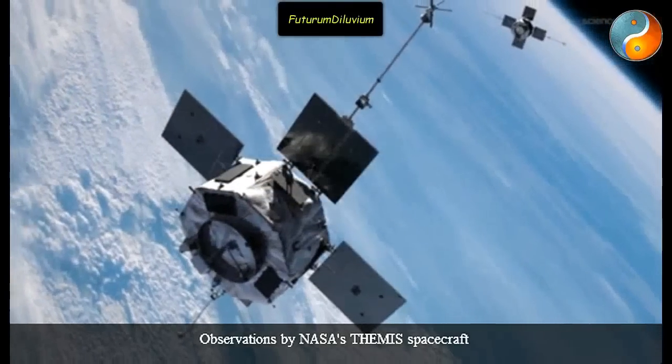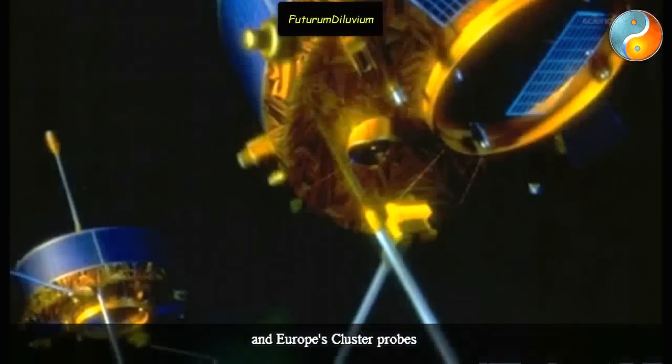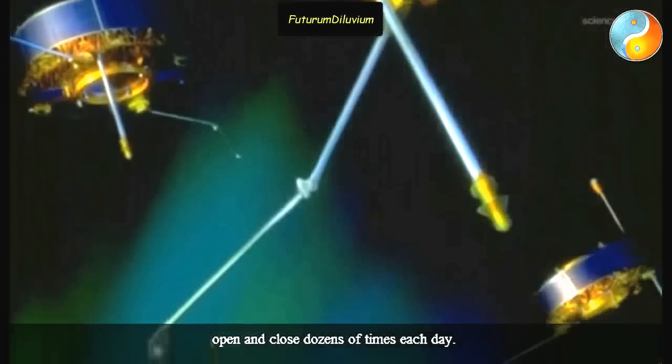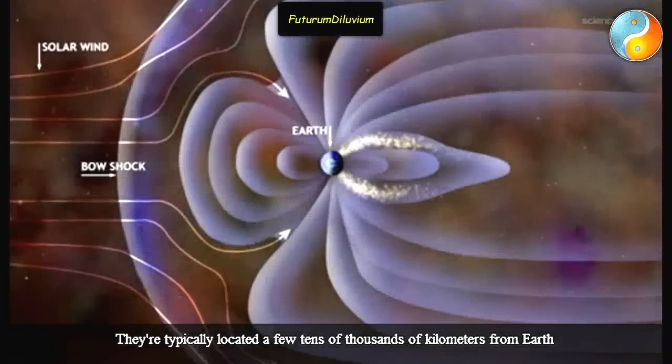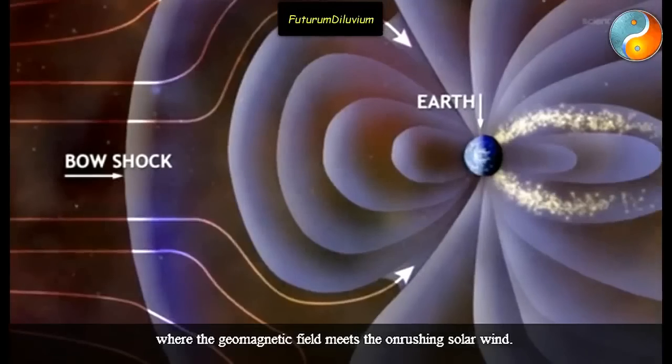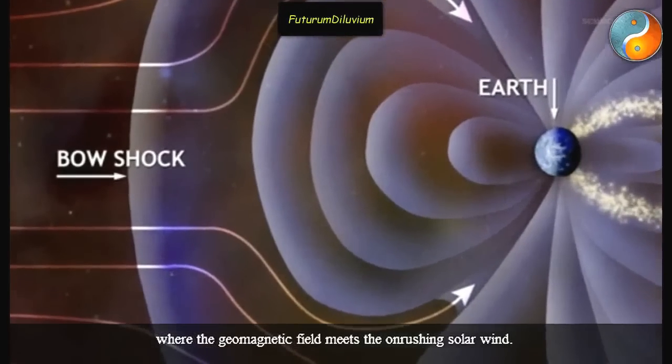Observations by NASA's Themis spacecraft and Europe's cluster probes suggest that these magnetic portals open and close dozens of times each day. They're typically located a few tens of thousands of kilometers from Earth, where the geomagnetic field meets the onrushing solar wind.